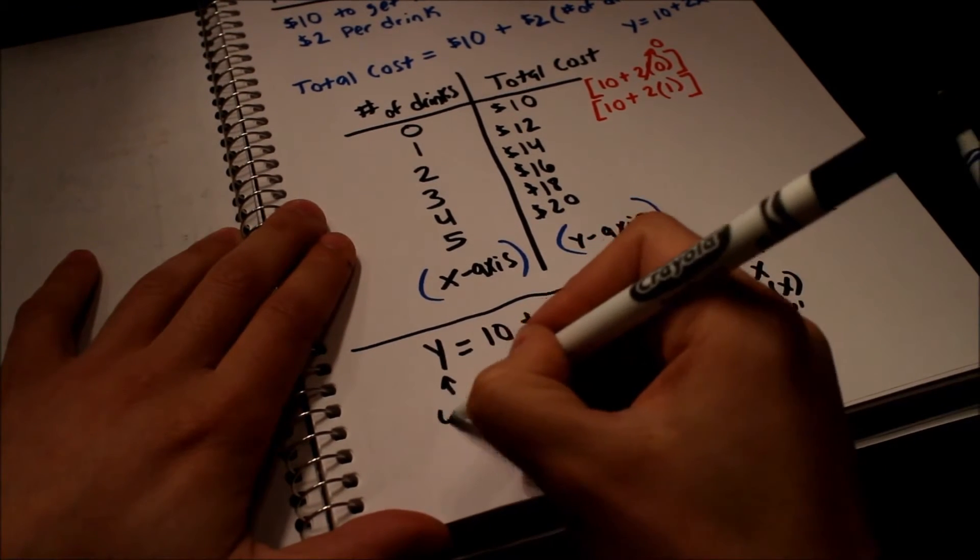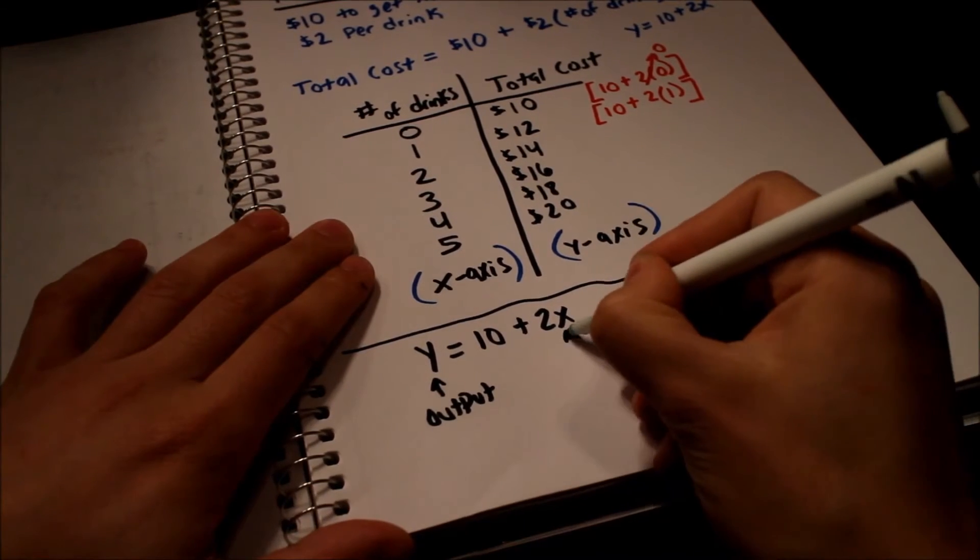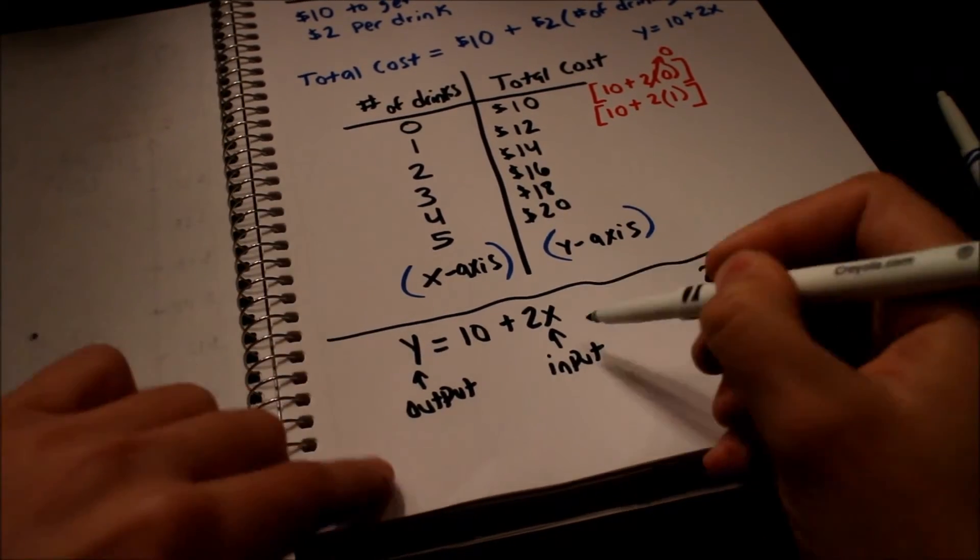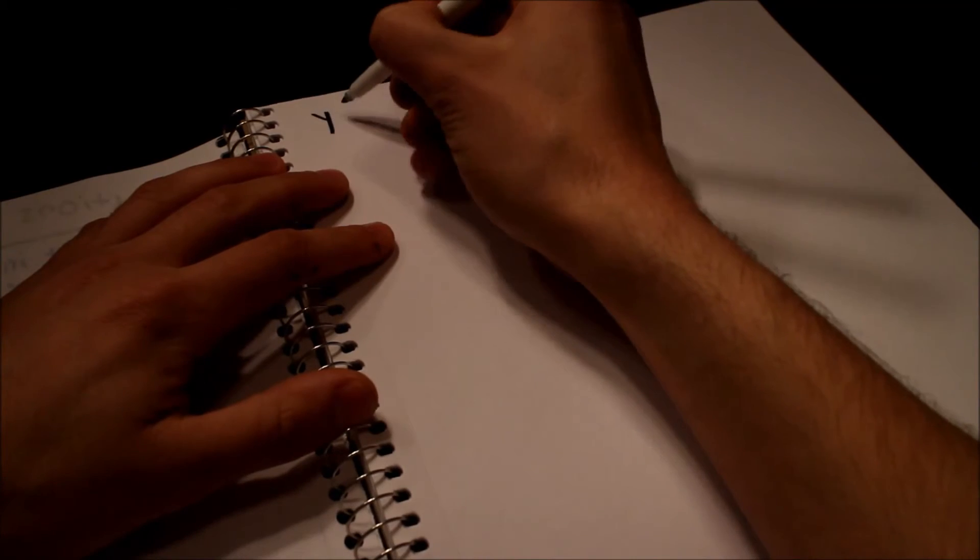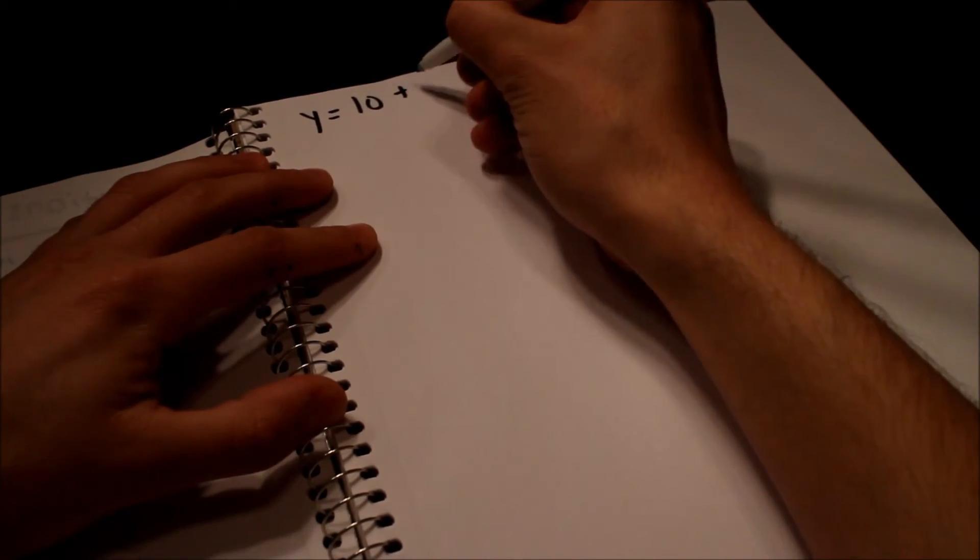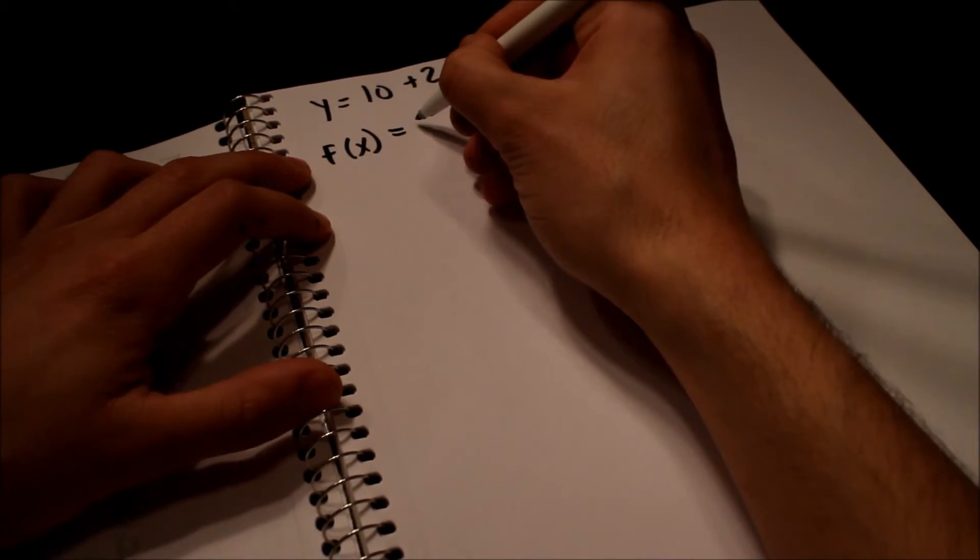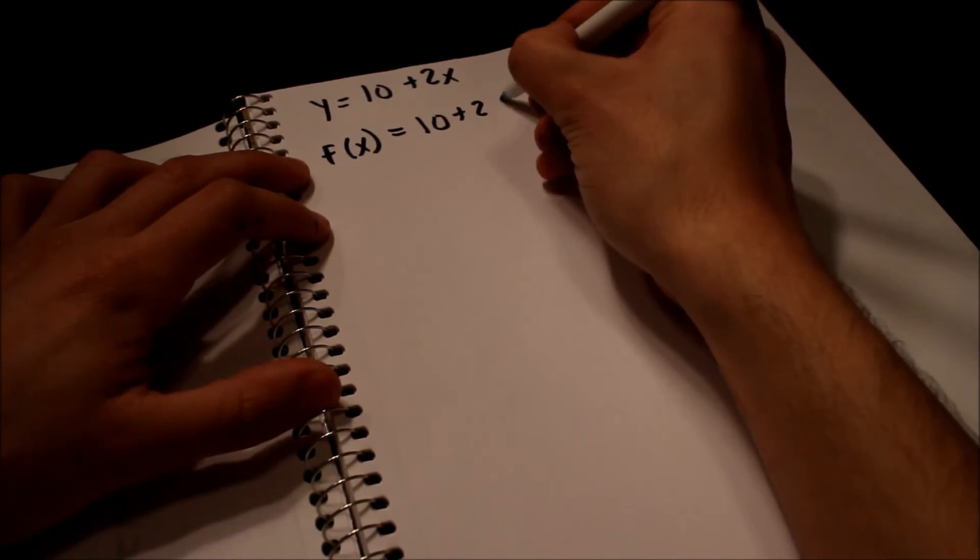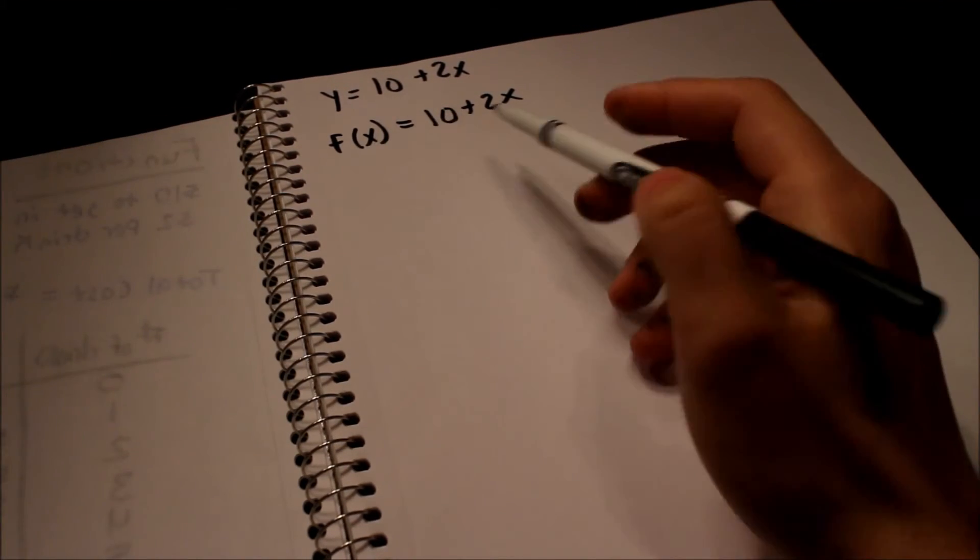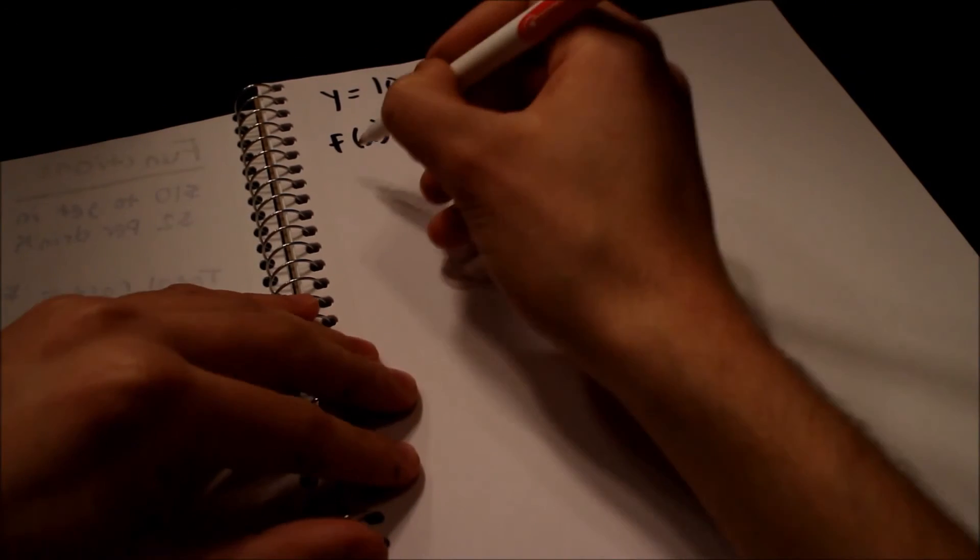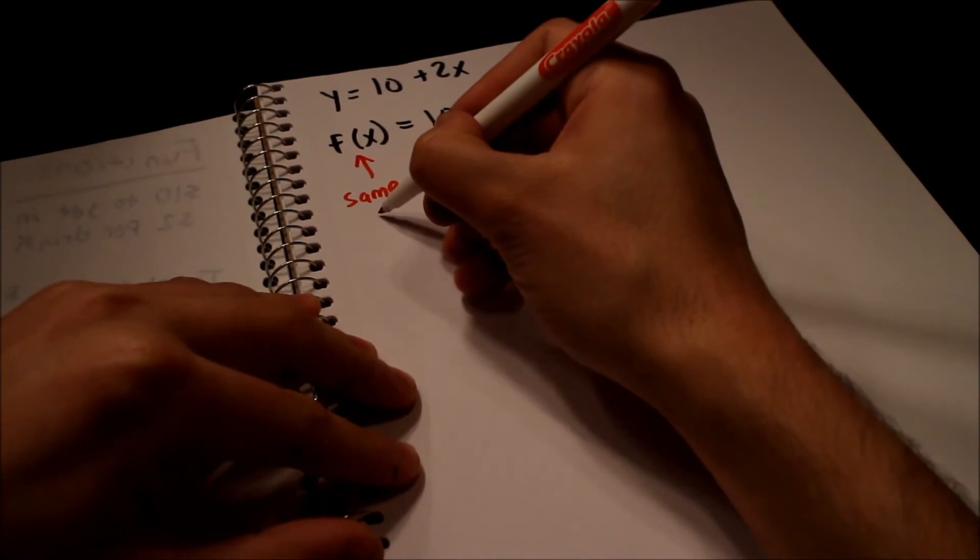So you've got y equals ten plus two x. Y, like we said, this is our output or the dependent result. It depends on what that thing is. That's why this is our input. So you've got an input and an output. Sometimes you'll see this written - I've got to use another page. We said y equals ten plus two x. Sometimes you'll see it written as f(x) equals ten plus two x. So f of x is the same thing as y. It's just a fancy way of saying it. So this is the same as y.